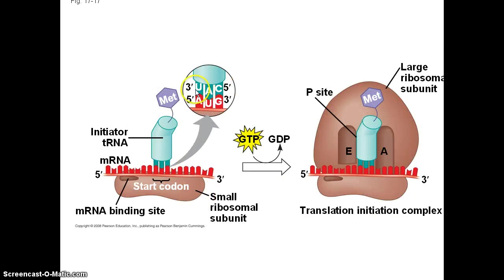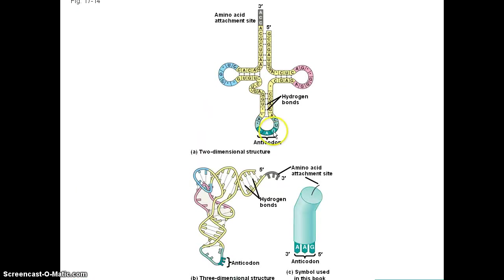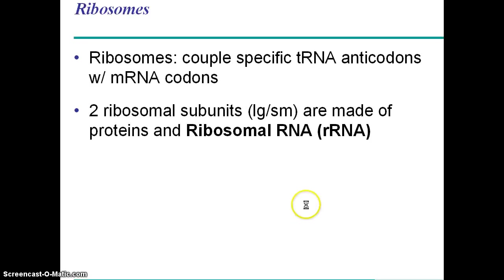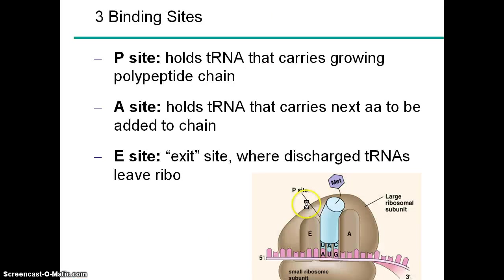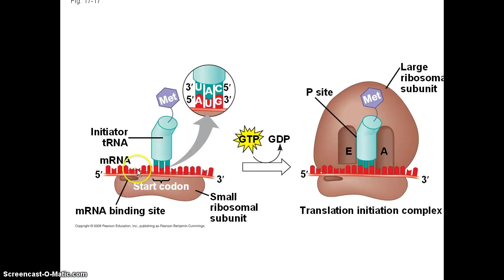Here you see some anticodon-codon binding. The anticodon is just three bases on the tRNA and they are complementary to the three bases on the mRNA. That's why it's important that mRNA is single-stranded.